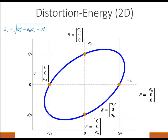So that's the distortion energy theory. For a given stress case and given loading conditions, sigma A and sigma B would be in one of these categories around the ellipse. What I'm going to do is find sigma A and sigma B and see how close it is to the maximum, as defined by this elliptical equation for the yield stress.